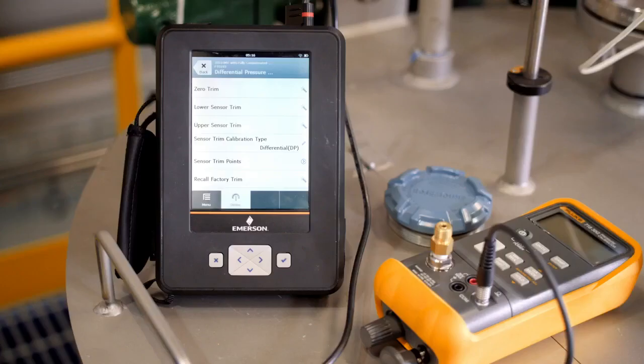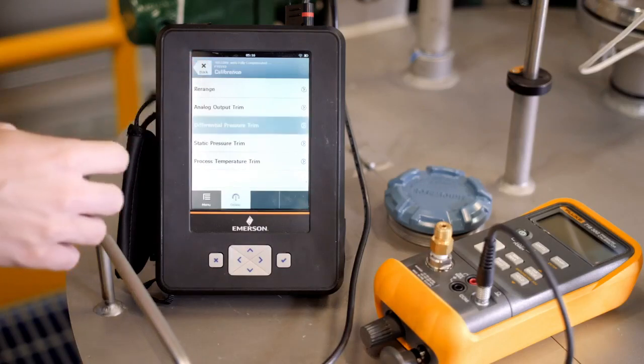The next step in calibrating a multivariable transmitter is to calibrate the static pressure sensor. The static pressure calibration follows a similar procedure as the DP sensor. The static pressure trims can also be accessed through the calibration page by selecting static pressure trim.